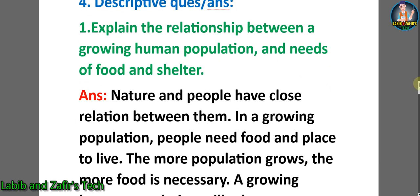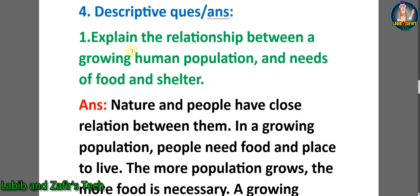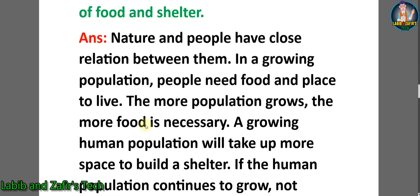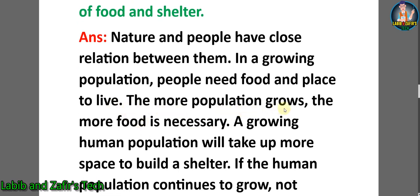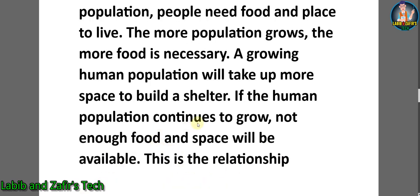Now let's go through some descriptive question answers. Number one: explain the relationship between a growing human population and needs of food and shelter. Answer: nature and people have a close relation between them. In a growing population, people need food and place to live. The more population grows, the more food is necessary. A growing human population will take up more space to build shelter. If the human population continues to grow, not enough food and space will be available.